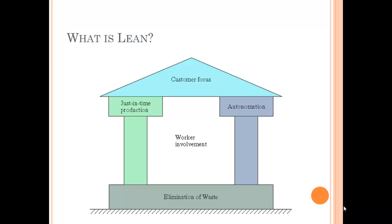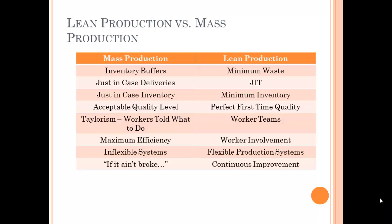Here's a graphic that might help you remember what LEAN is. The foundation of LEAN is the elimination of waste, and it's built on two pillars: just-in-time production and autonomation — that's not automation, that's automation with a human factor. Central to those pillars is worker involvement. Those two pillars then support the roof: customer focus. Because the whole point of LEAN is customer satisfaction.